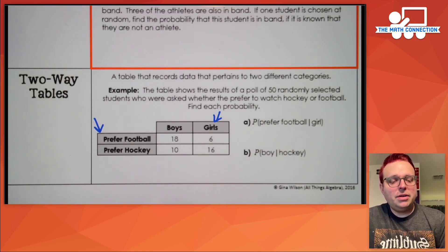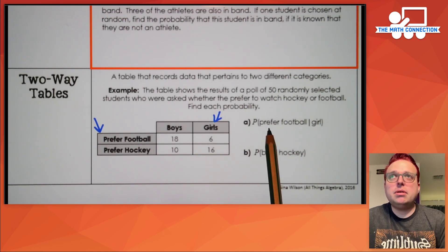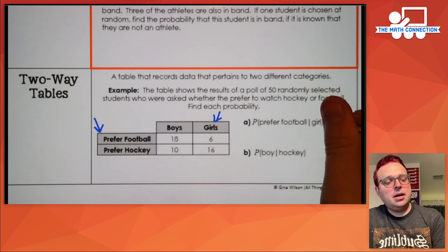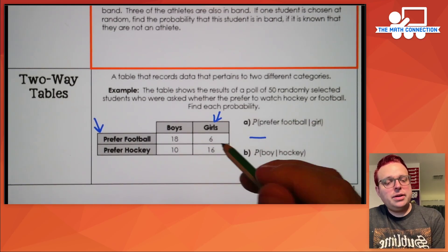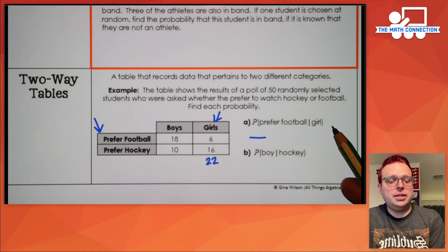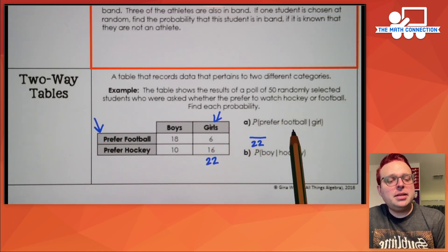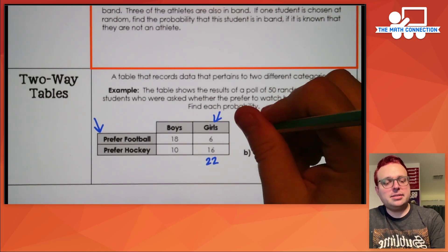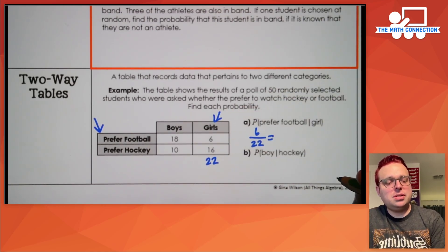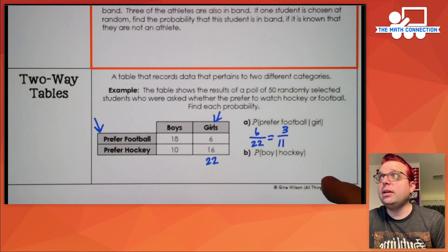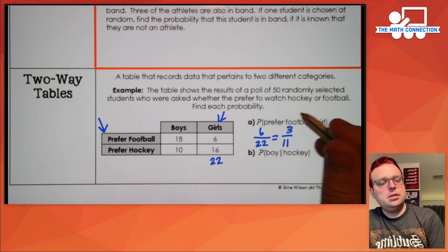To figure this out, we need to add up the number of people who are female — that's our denominator. The total number of girls surveyed was 22, so the denominator is 22. The numerator is the compound probability: the number of people who are female and prefer football, and that number is six. If we reduce this fraction by dividing by two, we get three out of 11. So the answer is 3/11.